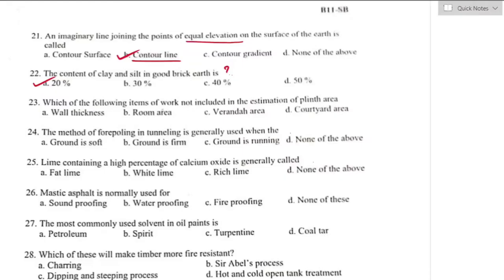Question number twenty-three: which item of work is not included in the estimation of plinth area? The area of a courtyard shall not be included in plinth area estimation. Option D is the right answer, because courtyard is an open space area and plinth area is the covered built-up area measured at the floor level of any storey or basement.